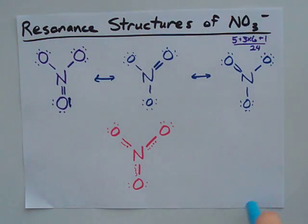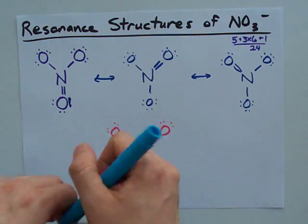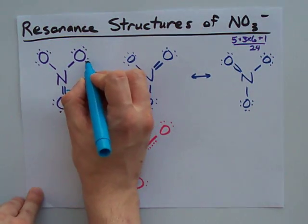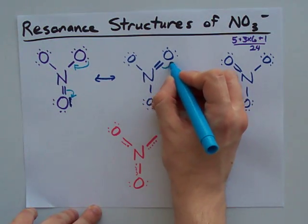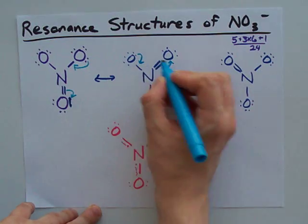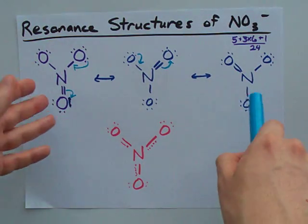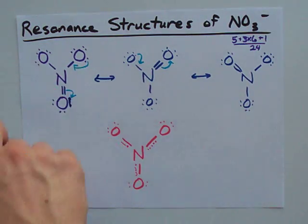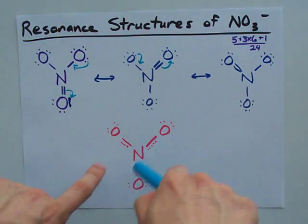The resonance structures you can create simply by pushing electrons around. You could take this double bond, put it back on the oxygen, and then simply move those electrons into the double bond. You could push those back to the oxygen and move those to the double bond to get this. You can push electrons around, or you can simply look at it and say, oh, the electrons could have come from here, or here, or here. And thus, the actual structure is a combination of the three.